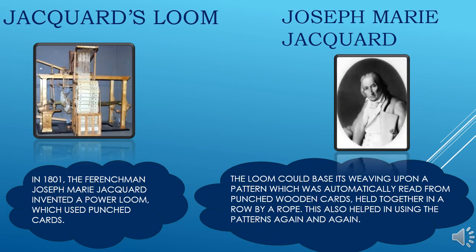In 1801, the Frenchman Joseph Marie Jacquard invented a power loom which used punch cards. The loom could base its weaving upon a pattern which was automatically read from punched wooden cards held together in a row by a rope. This also helped in using the patterns again and again.